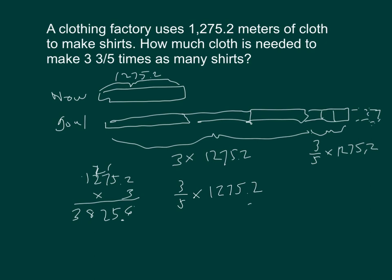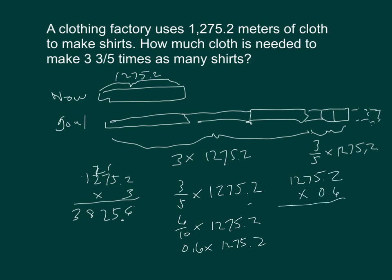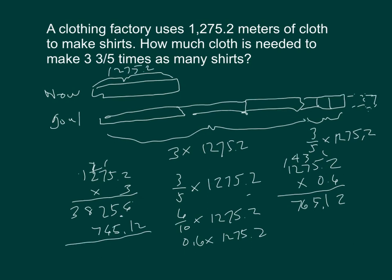For the 3-fifths times 1,275.2, we note that 3-fifths equals 6-tenths, which equals 0.6. Multiplying 0.6 times 1,275.2: 6 times 2 is 12, 6 times 5 is 30 plus 1 is 31, 6 times 7 is 42 plus 3 is 45, 6 times 2 is 12 plus 4 is 16, and 6 times 1 is 6 plus 1 is 7, giving 765.12. Adding 3,825.6 and 765.12 together gives the final answer.